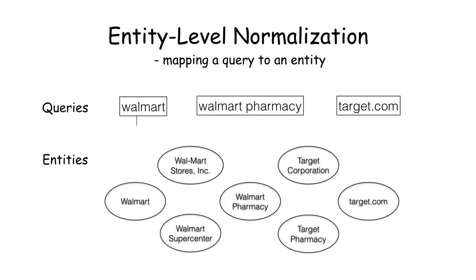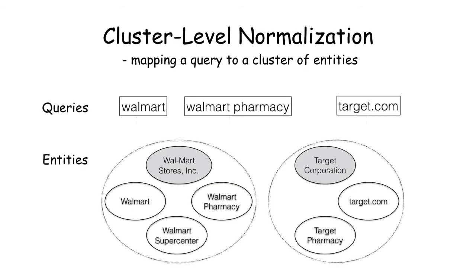While entity-level normalization maps a query to an entity that best matches the query, class-level normalization maps a query to a cluster of entities that best match the query. Based on an entity-level normalization result, we can look up its cluster representative entity as a class-level normalization result.